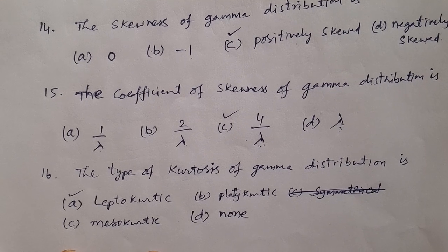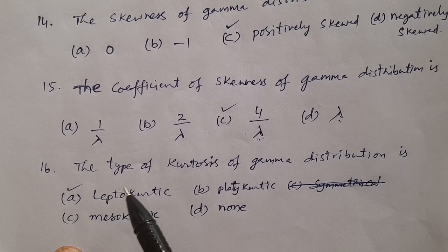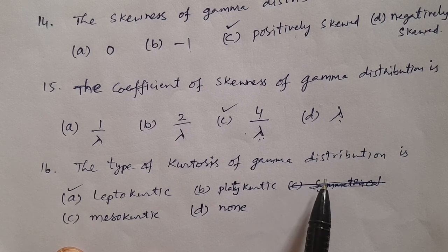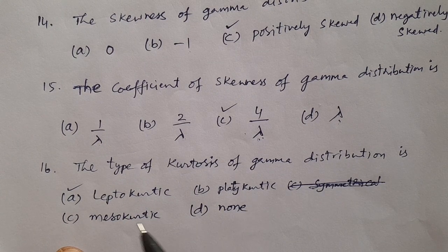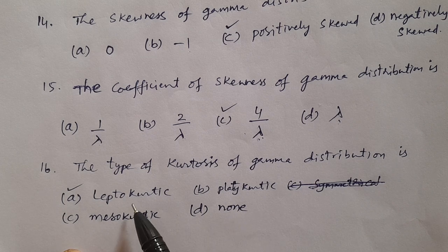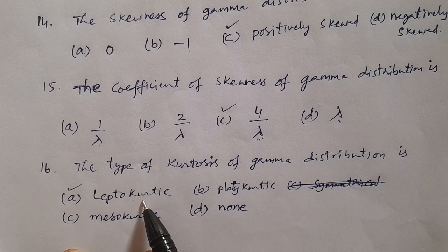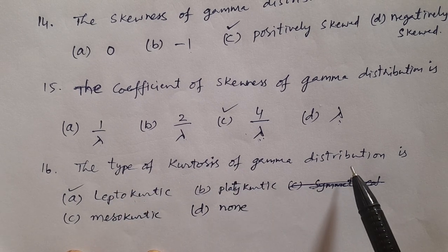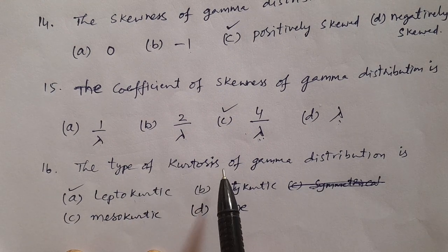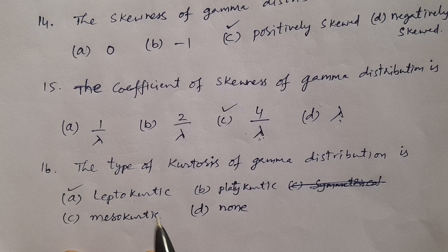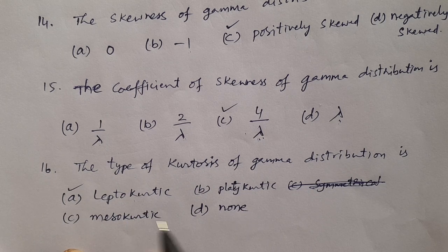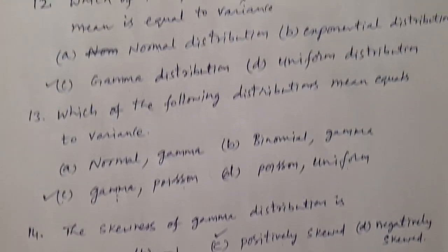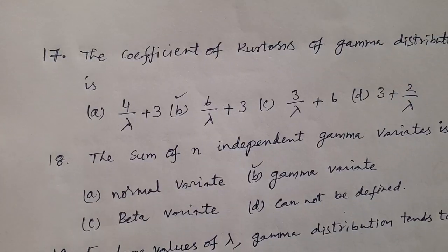The coefficient of skewness of gamma distribution is 4/λ. Question number 16: What is the type of kurtosis of gamma distribution? Options: A) Leptokurtic, B) Platykurtic, C) Mesokurtic, D) None. The answer is A — Leptokurtic. Gamma distribution is a leptokurtic distribution.